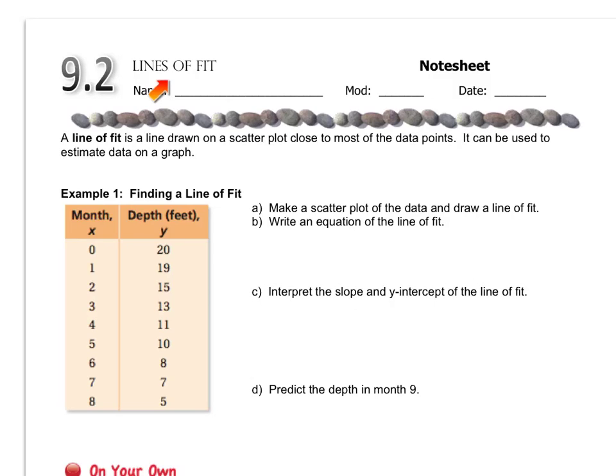We're going to start off doing what we did last time. Letter A wants you to make a scatter plot of the data and draw a line of fit. So I'd like you to pause the video, grab a piece of graph paper, no line paper or blank paper, I want a graph paper scatter plot, and please plot the values, make a scatter plot. Once you have the scatter plot press play and I'll help you continue the rest.